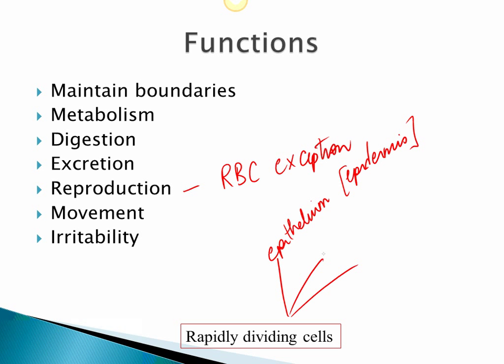Other areas with rapidly dividing cells include bone marrow — not just white blood cells but all blood cells are produced there. Hair follicles are also very rapidly dividing; you lose hair every day and it comes back fast. So these are some areas of the body where cells are rapidly dividing.